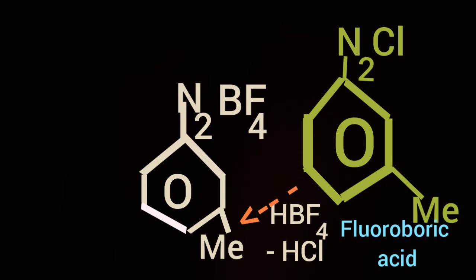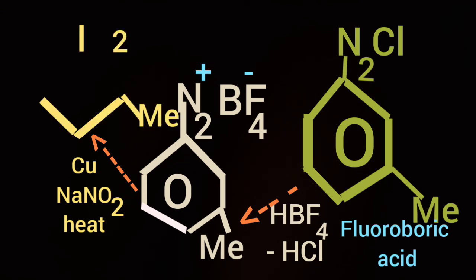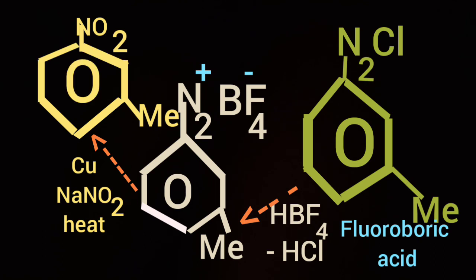You will find N2+ BF4- as shown. The compound so produced is treated with, or you can say heated with, copper and sodium nitrite. And the product is 3-nitrotoluene. N2+ BF4- is converted to NO2.